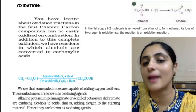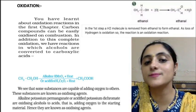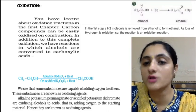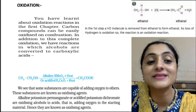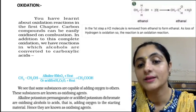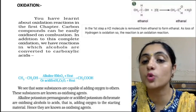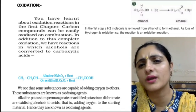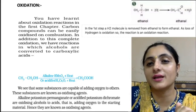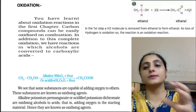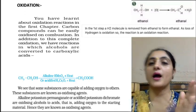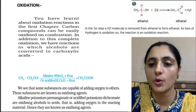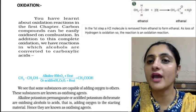Oxidation is when we heat a carbon compound in the presence of any oxidizing agent. The best oxidizing agents are alkaline KMnO₄ (potassium permanganate) and acidified K₂Cr₂O₇ (potassium dichromate). These substances add oxygen to other compounds. When ethanol is oxidized, oxygen is added — we can see there is an addition of two oxygen atoms — and we get ethanoic acid. So some substances capable of adding oxygen to others are known as oxidizing agents. Alkaline potassium permanganate and acidified potassium dichromate oxidize alcohols to acids: ethanol becomes ethanoic acid.